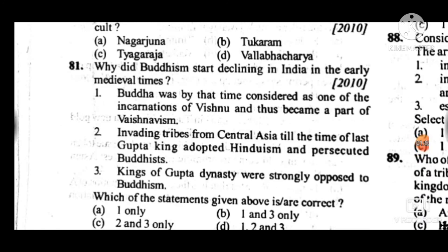Question 81: Why did Buddhism start declining in India in the early medieval times? Answer to question 81 is A: only one statement is correct — Buddha was by that time considered as one of the incarnations of Vishnu and thus became a part of Vaishnavism. This was the reason for the decline of Buddhism at the beginning of early medieval times.